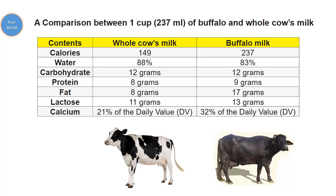Carbohydrates are 12 grams in cow's milk and the same 12 grams in buffalo milk. Protein is 8 grams in cow's milk and 9 grams in buffalo milk. Fat is 8 grams versus 17 grams, lactose is 11 grams versus 13 grams, and calcium is 21 percent of the daily value for cow's milk versus 32 percent for buffalo milk.